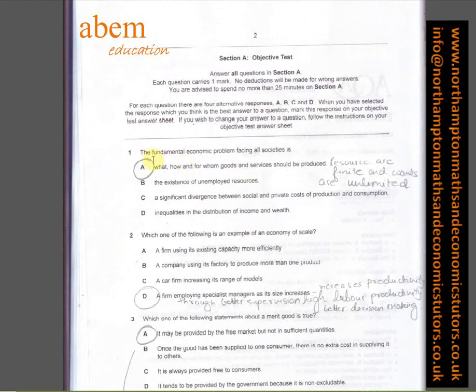The first question is about the fundamental economic problem. The answer is A because we know resources are finite and wants are unlimited. That's why what, how, and for whom goods and services should be produced.